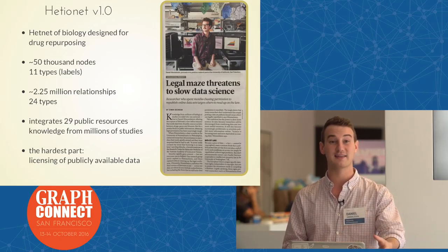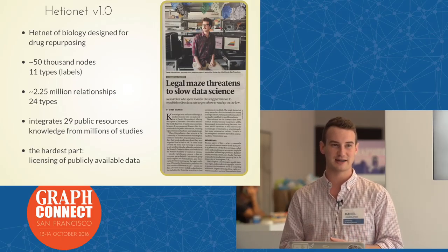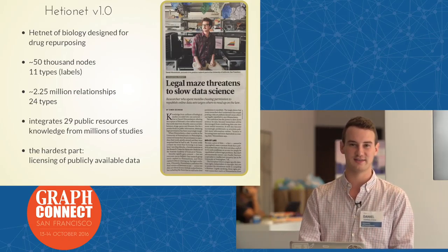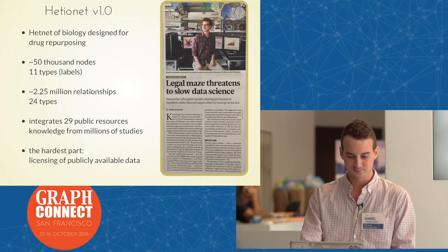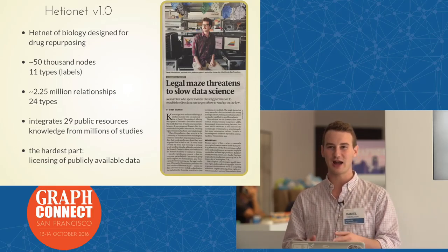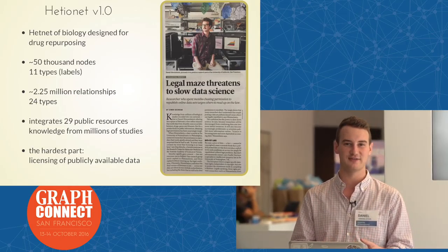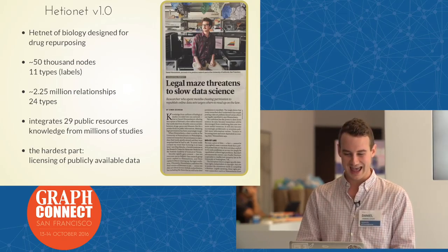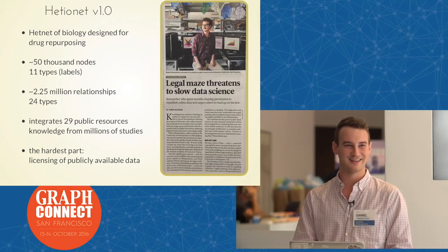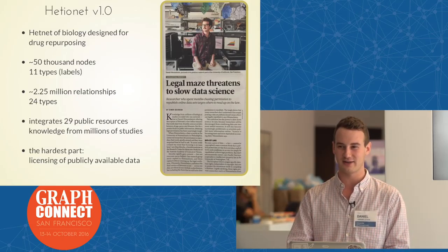A lot of our edges point back to the studies that the information came from. Much of this information was extracted through manual curation by third parties, text mining, big genomic experiments, or sequencing. The hardest part was actually the licensing of all this publicly available data. Just because you have access to data online doesn't mean you can use it, reproduce it, and give it away however you want. Nature News wrote an article on this: 'Legal maze threatens to slow data science.' So as a public service announcement, if you're releasing data online and you want people to use it, make sure to put an open license.